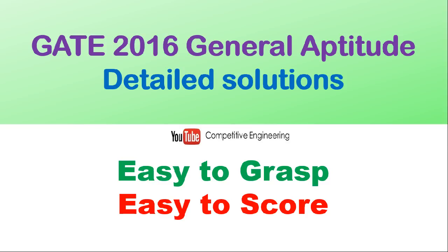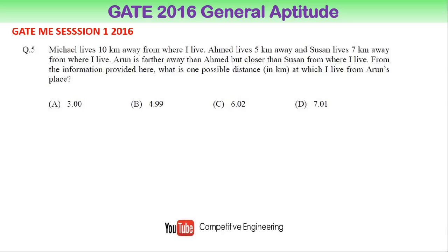GATE 2016 general aptitude detailed solutions. Here is one question from GATE mechanical engineering session 1 in 2016. The question is: Michael lives 10 km away from where I live, Ahmad lives 5 km away, and Susan lives 7 km away from where I live. Harun is farther than Ahmad but closer than Susan from where I live. What is one possible distance in kilometers at which I live from Arun's place? There are four options. Let us summarize the key points in this question — there are five people.